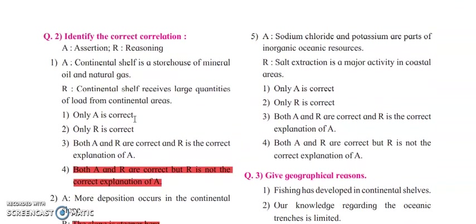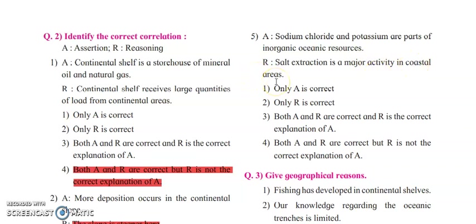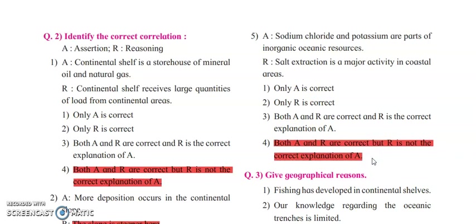Next: sodium chloride and potassium are parts of inorganic ocean resources. Reasoning: salt extracting is a major activity in the coastal areas. Here both A and R are correct, but R is not the correct explanation of A — they don't relate much.